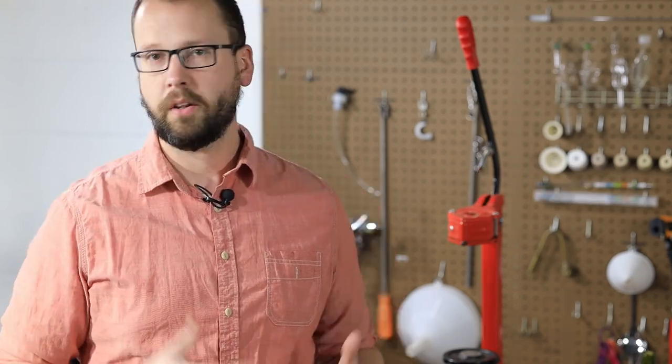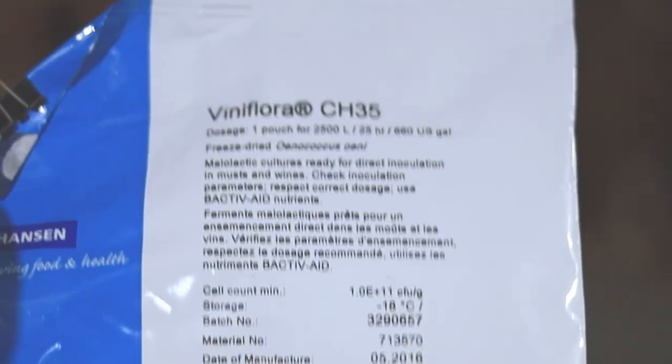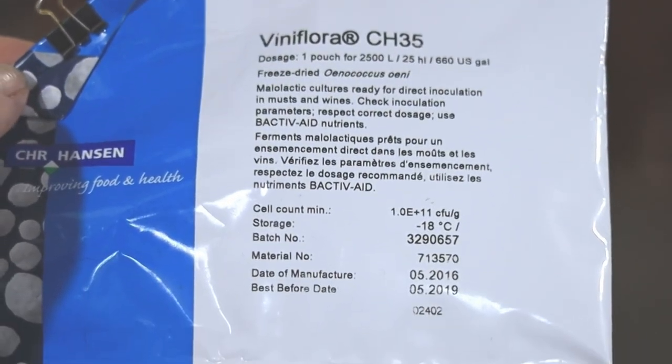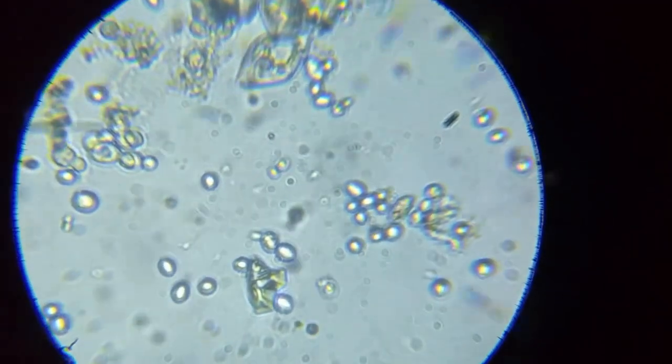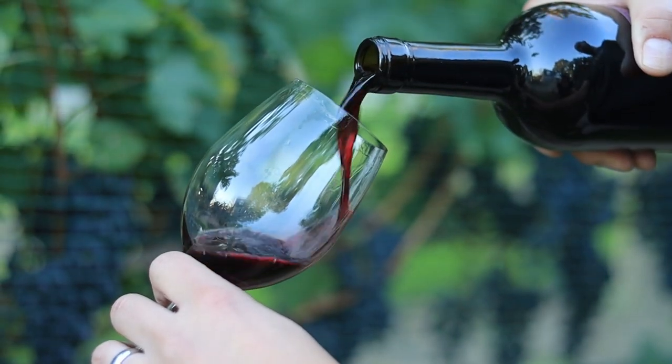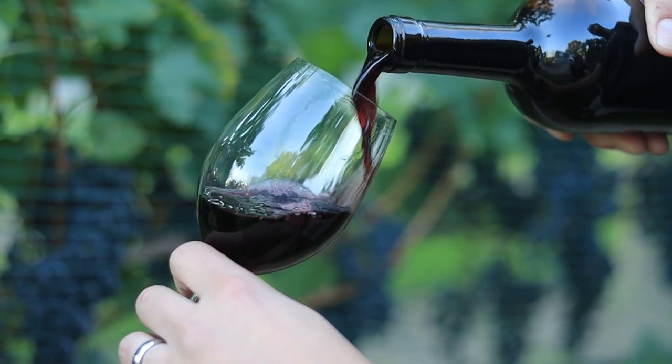Malolactic fermentation is the bacterial fermentation that converts the sour tasting malic acid into lactic acid in wine and this is going to happen in almost all red wines or at least you're generally going to want it to happen.